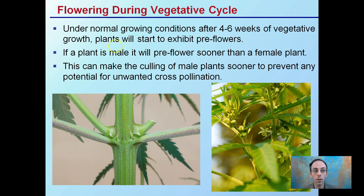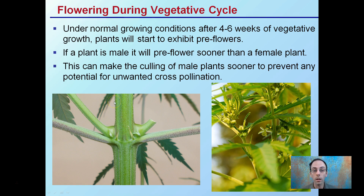Flowering during the vegetative cycle: under normal growing conditions, after about four to six weeks of vegetative growth, plants will start to exhibit something called pre-flowers. If it's a male plant, it will produce flowers sooner than a female plant. This is what the male flowers look like — these are the ones you want to cull sooner to prevent any potential unwanted cross-pollination with a female. This is what a female pre-flower looks like. So when looking at the vegetative state, we're looking at plant structure and leaves, but there will be an initial form of flowers developing.